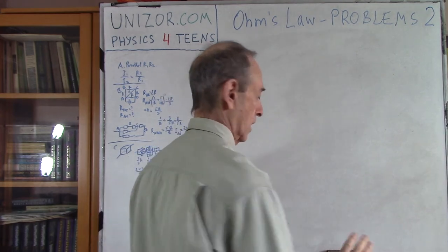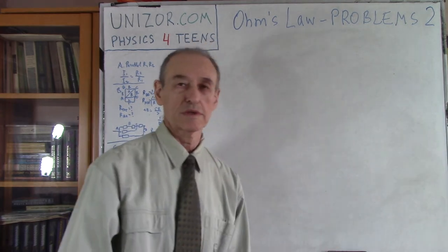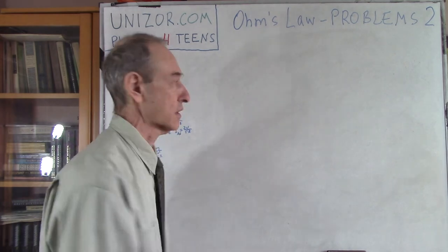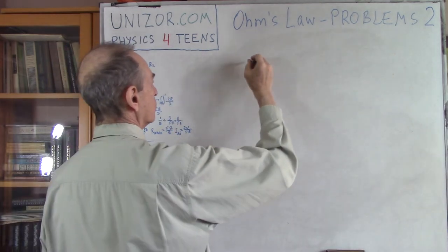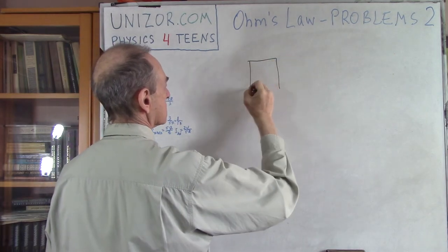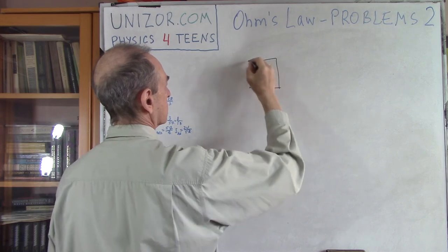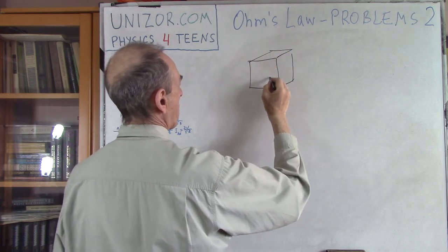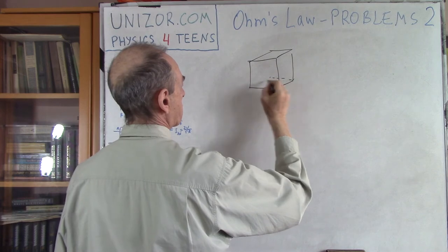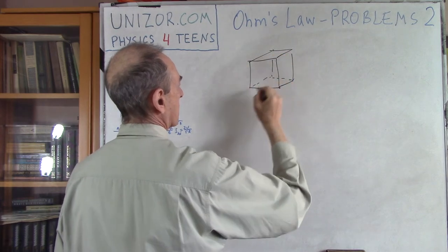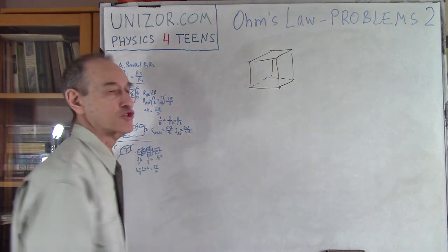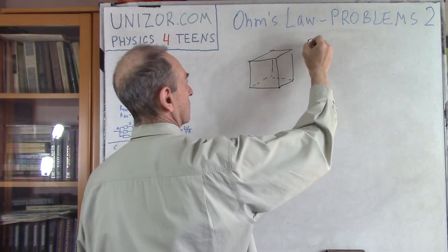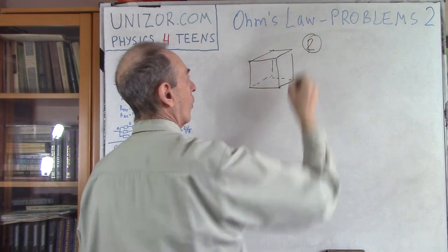The third problem also has a little trick, but again it depends on how you view the whole thing. You have a cube made of resistors — each edge is a resistor R, all identical.